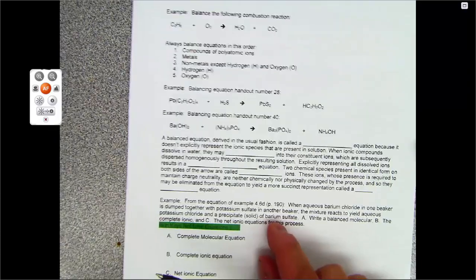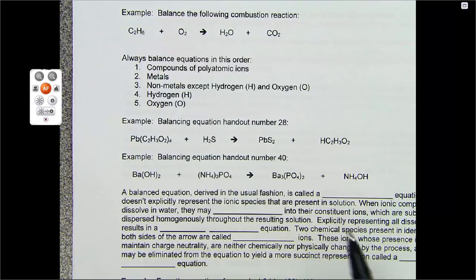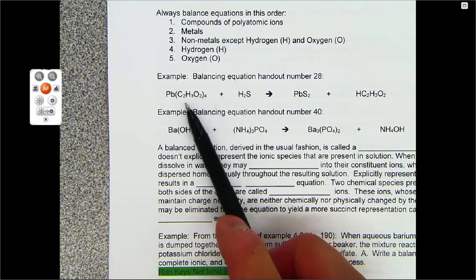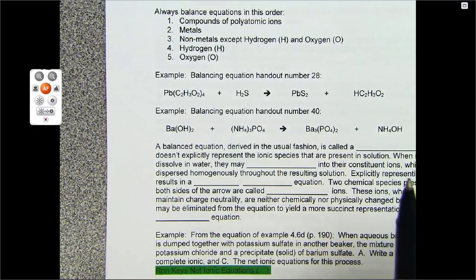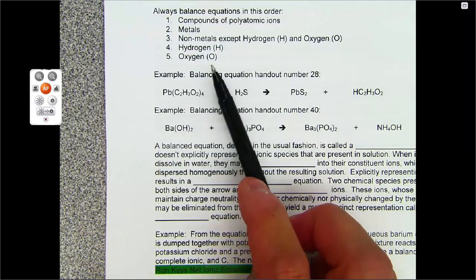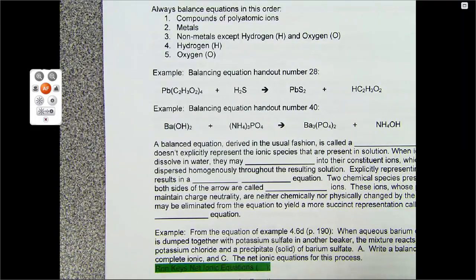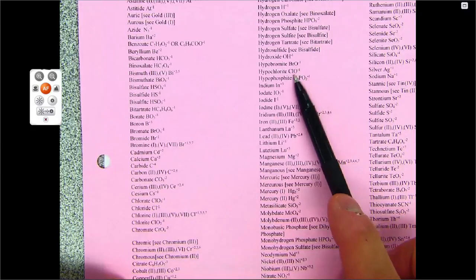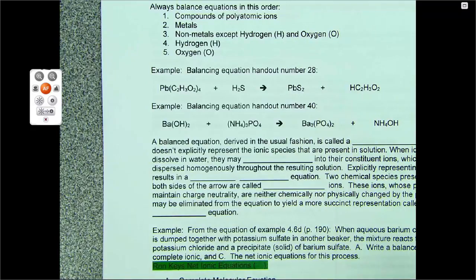And the reason you want to do polyatomic ions first is if you have formulas of compounds like this one, in parentheses, that's an acetate, well, you're kind of taking care of oxygen, hydrogen, and carbon all at the same time. And we want to do oxygen last because there's eight oxygen here. Most of our polyatomic ions from our pink sheet have oxygen, so we want to leave those for last.